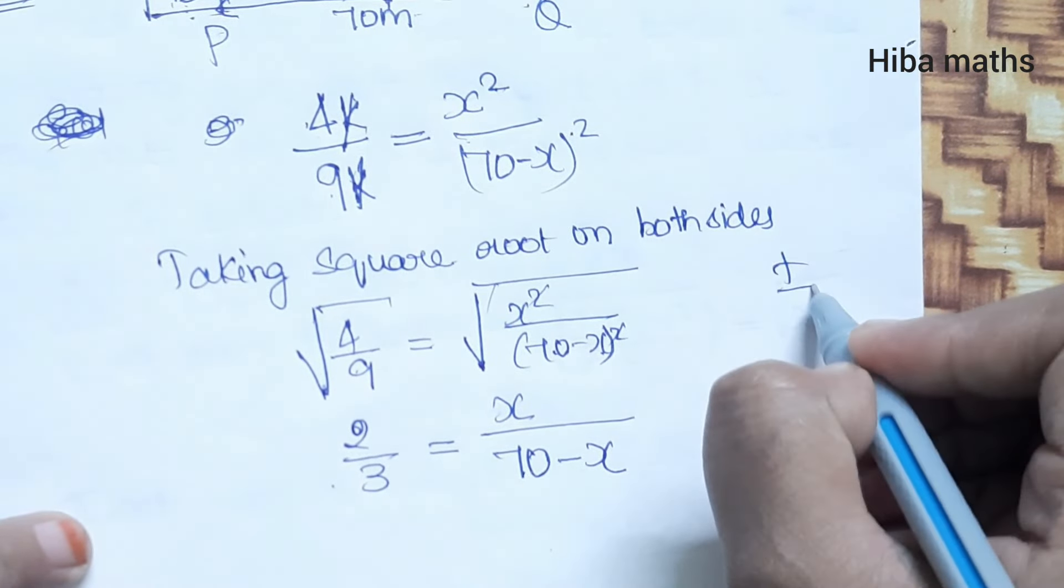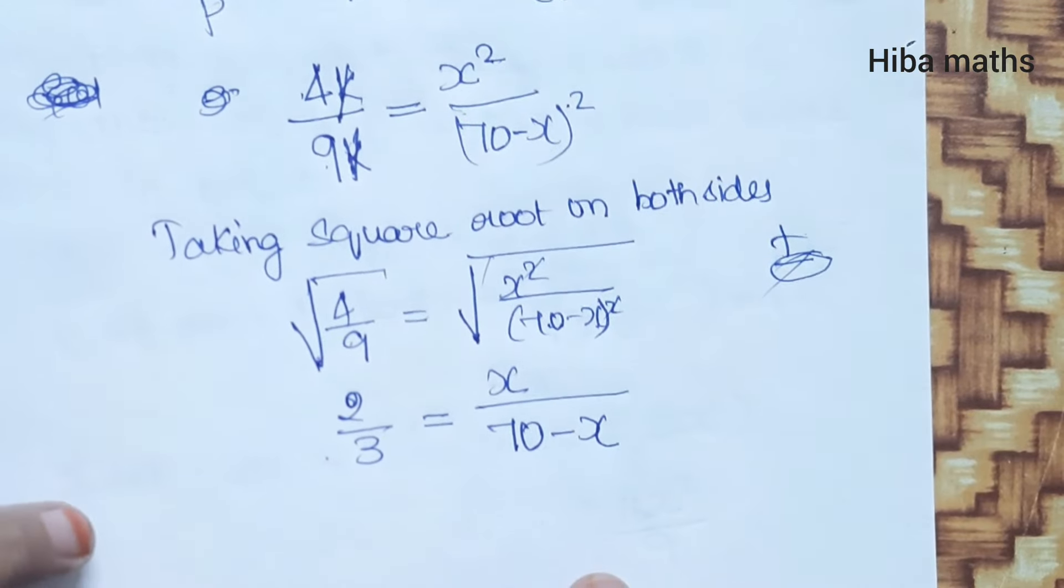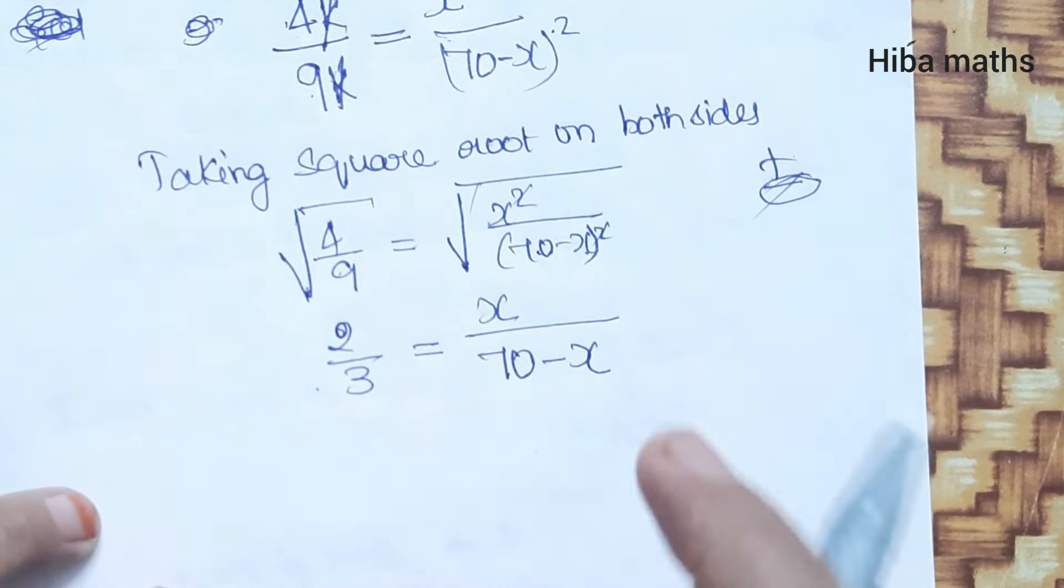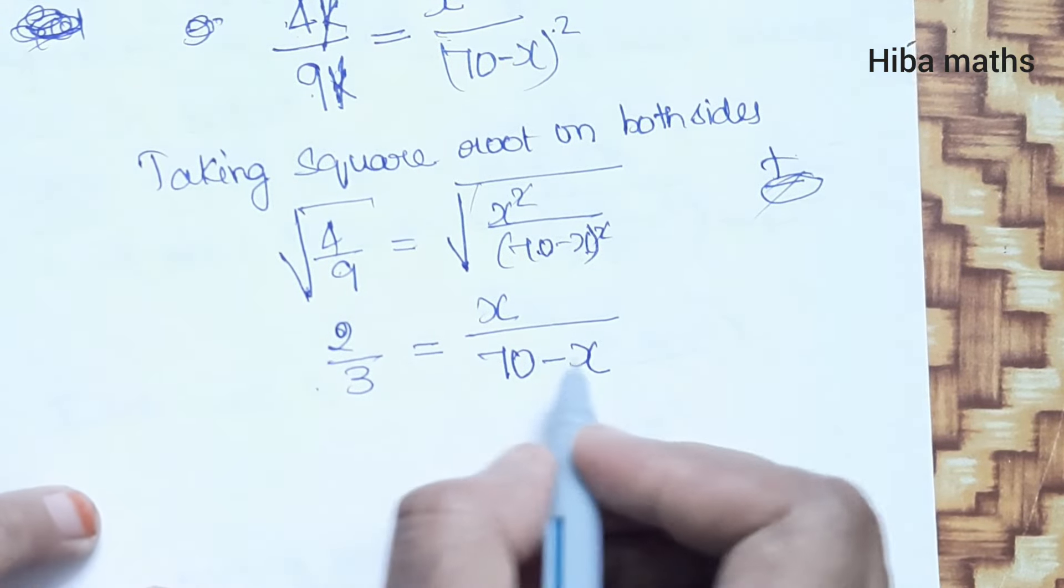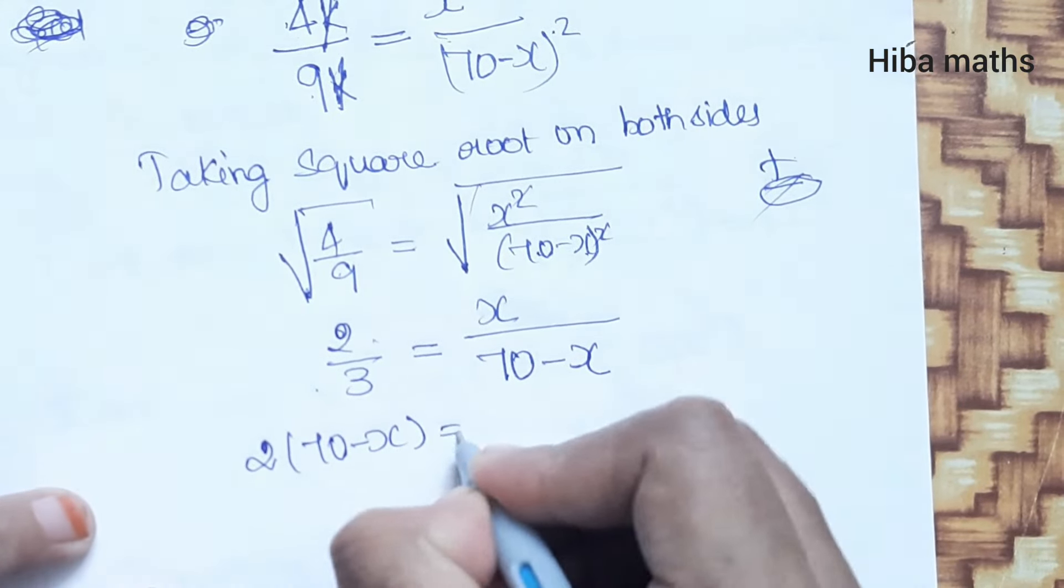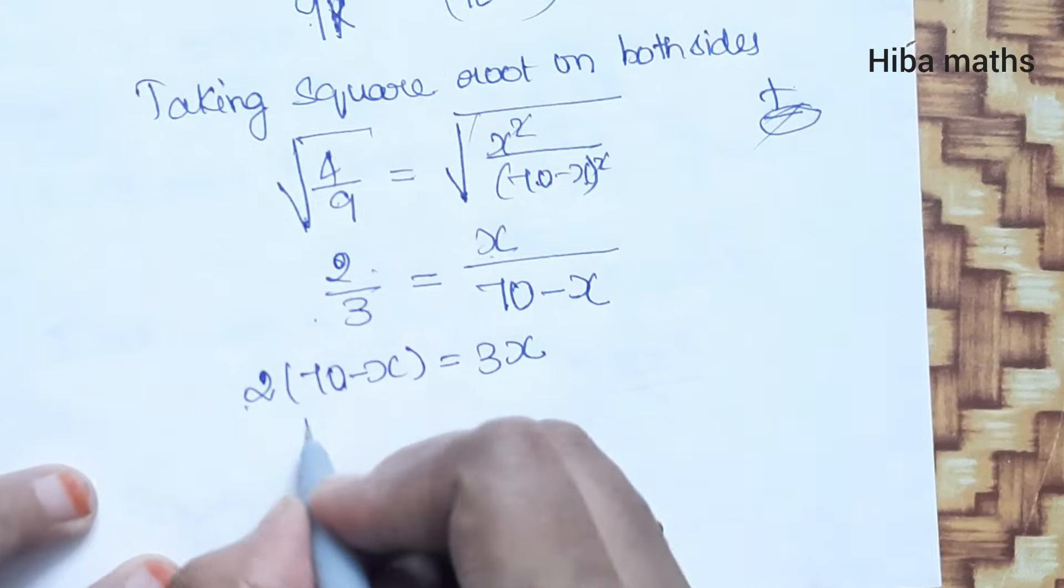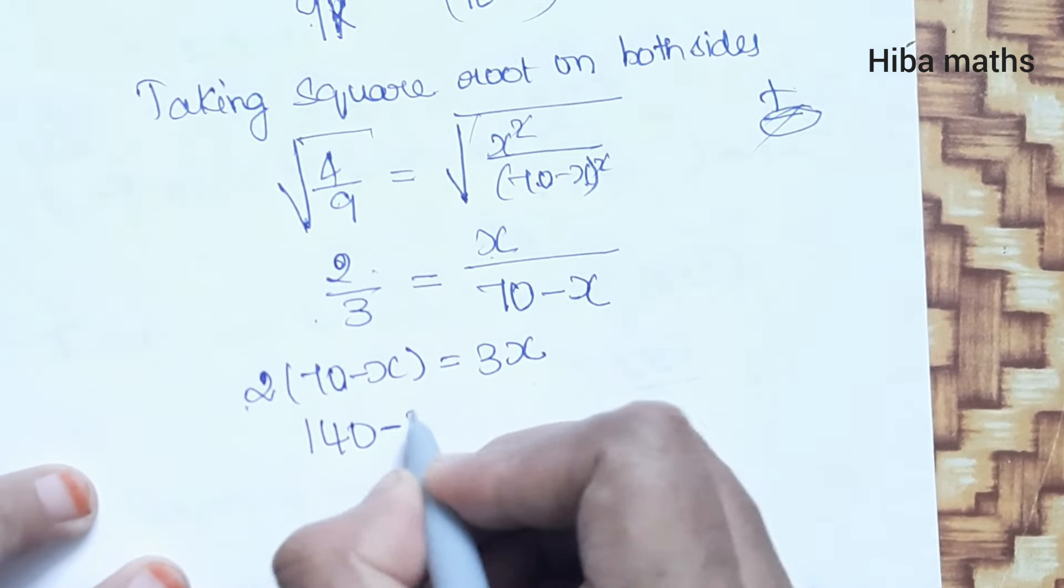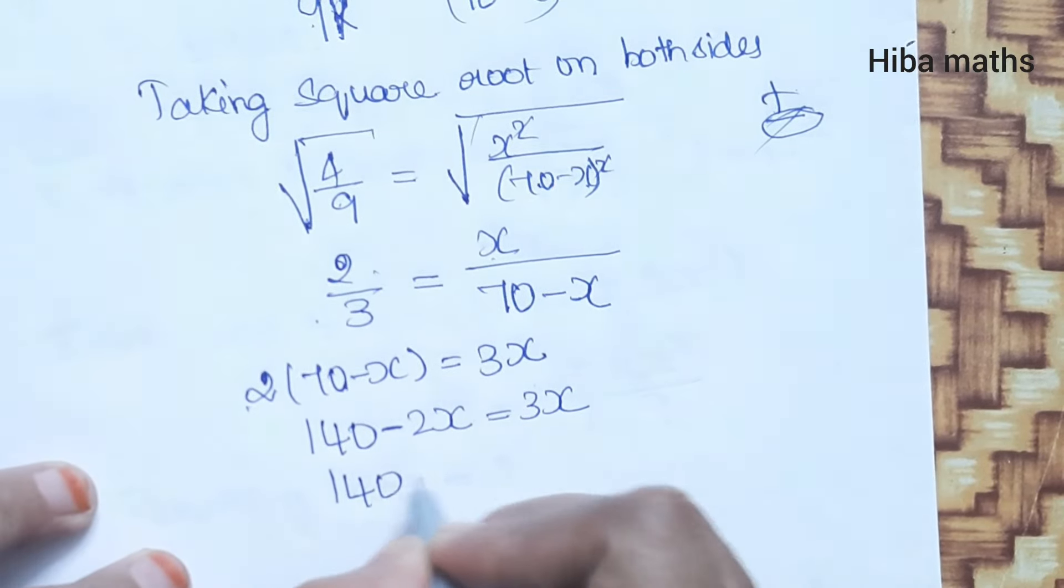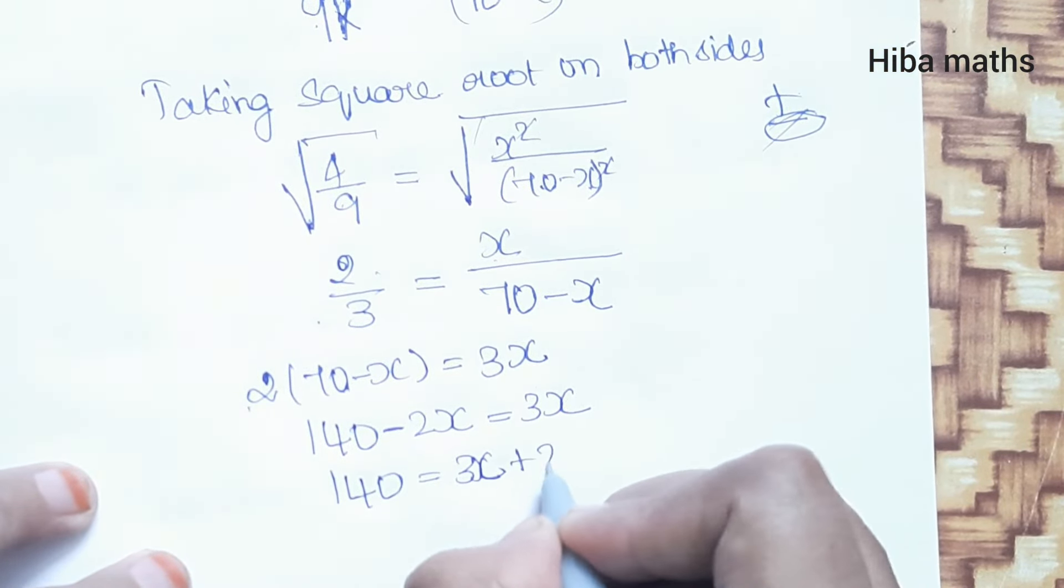Plus or minus, but distance can't be negative, so we avoid the minus value. Cross multiply: 2 times (70 minus x) equals 3 times x. 140 minus 2x equals 3x. So 140 equals 3x plus 2x.